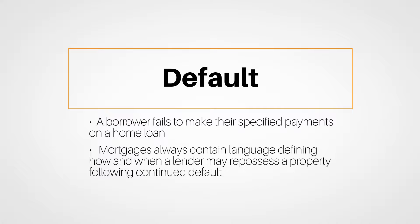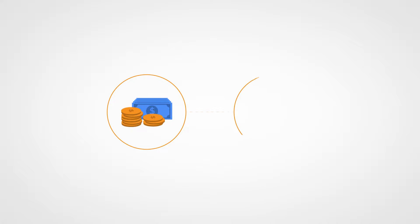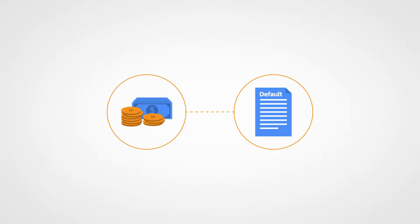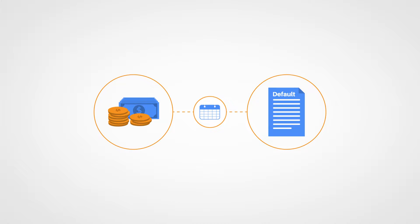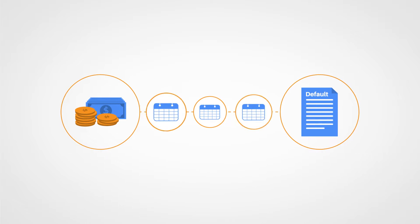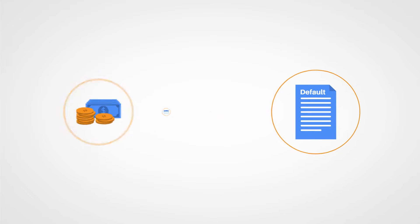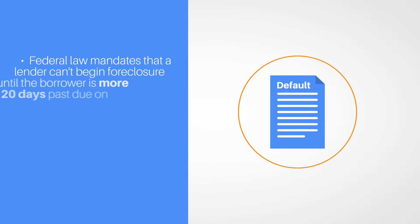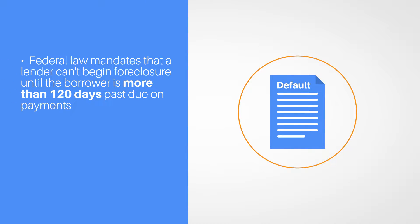Let's go over the basic steps. Different loans have different timelines on when default begins and when further action can be taken. One loan may default after only a month and another may go into default after three months. In most cases, federal law mandates that a lender can't begin foreclosure until the borrower is more than 120 days past due on payments. The state also has statutes with regard to those timelines.